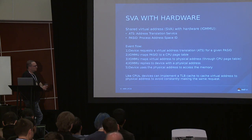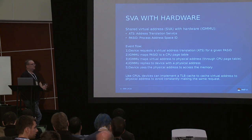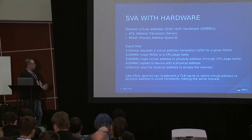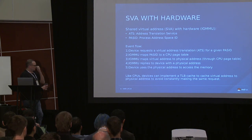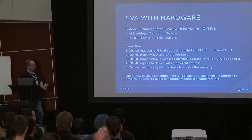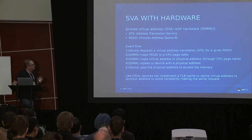On most existing CPUs, it's actually the exact same silicon used for both the IOMMU and the CPU page table walker. The IOMMU then replies to the device, giving it a physical address corresponding to the requested virtual address. The device then uses the physical address for memory access. Like CPUs, devices implement TLBs to cache translations so they don't always have to request the same mapping between virtual address and physical memory from the IOMMU.